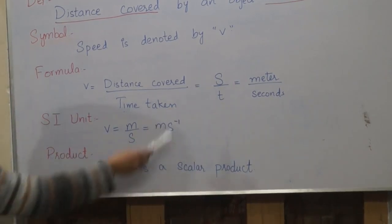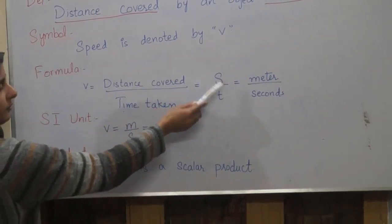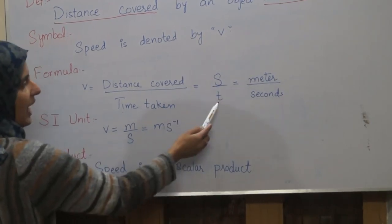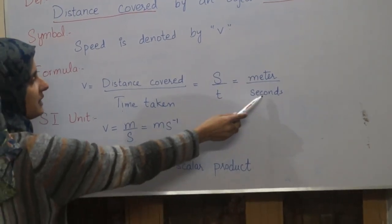In System International, the SI unit of distance is meter and the SI unit of time is seconds.